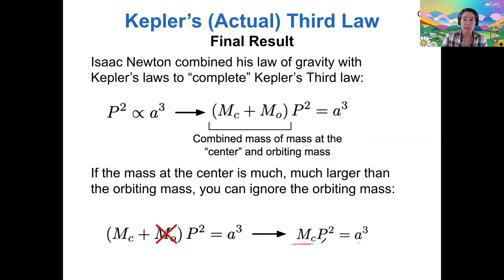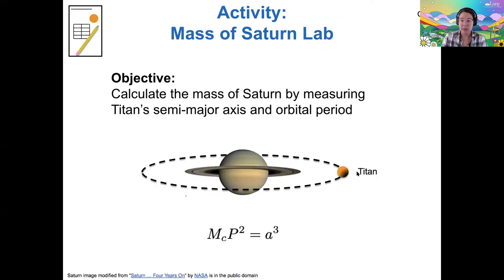So we're going to use this today to calculate the mass of Saturn. What we're going to do is a lab where we're going to take the moon Titan, Saturn's largest moon, and we're going to find out its orbital period and its semi-major axis using observational data from a telescope, and use that data to find the mass of Saturn.